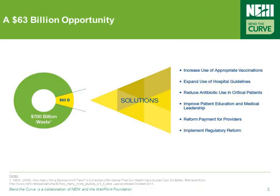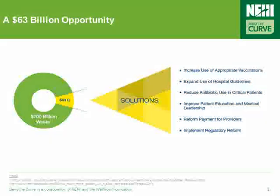Targeting the $63 billion spent annually on antibiotic overuse requires building on a set of proven practices and implementing policy actions that target the root causes of the problem. These include implementing regulatory reform, promoting the use of outcomes-based reimbursements, and reducing antibiotic use in critical patients, among others. But before we talk about the tools healthcare leaders can utilize to reduce antibiotic overuse, we first have to talk about the size and scope of this very real healthcare issue.